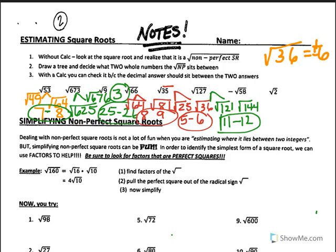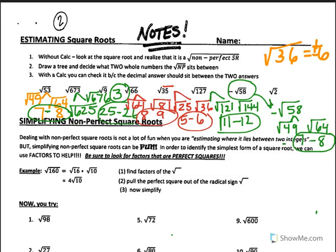Next we have the square root of 58. Is there a perfect square root? No. So it's going to be between the square root of 49, which is 7, and 64, which gives us 8. And if there's a negative sign, we just drag the negative sign down.